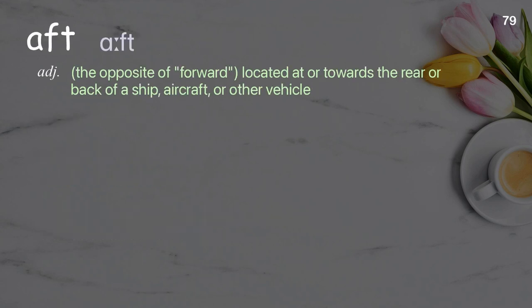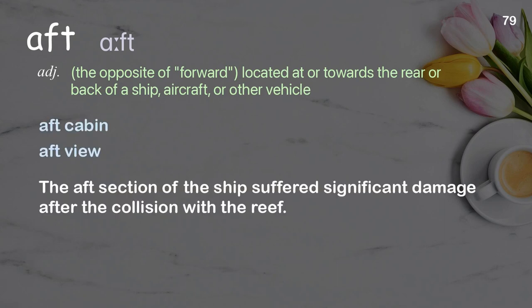Aft: the opposite of forward; located at or towards the rear or back of a ship, aircraft, or other vehicle. Examples: aft cabin, aft view. The aft section of the ship suffered significant damage after the collision with the reef.